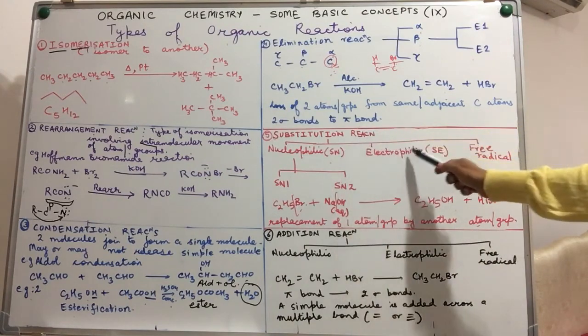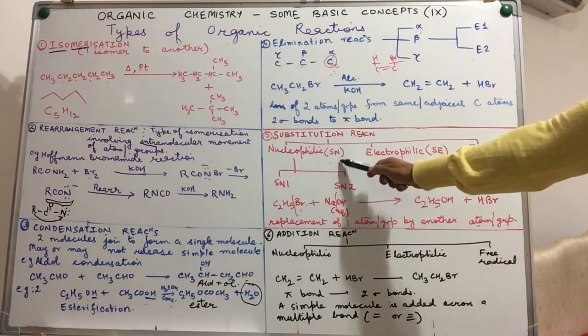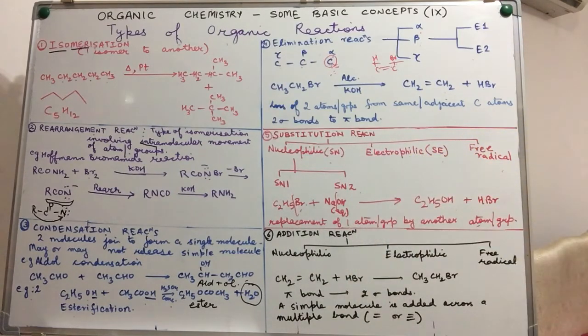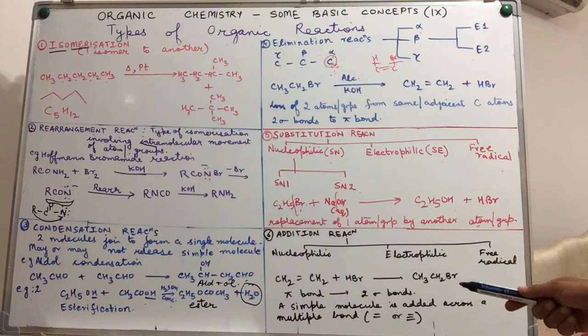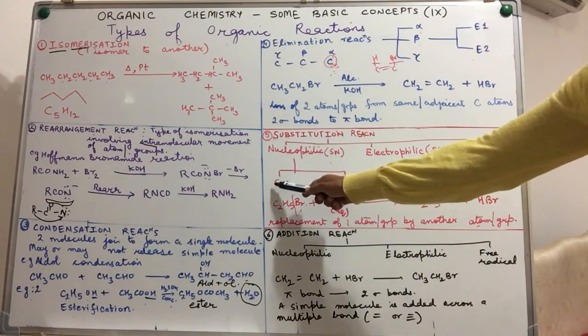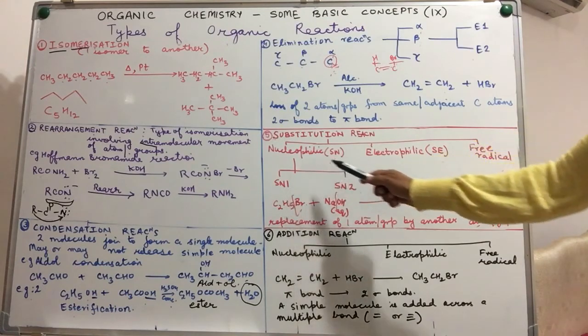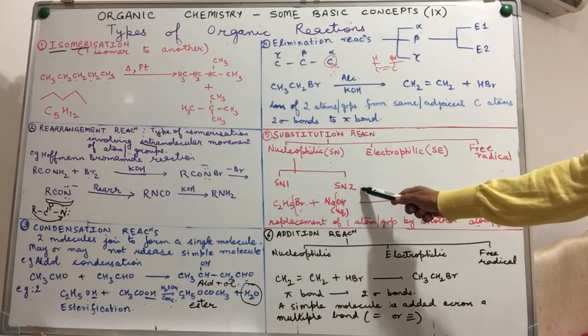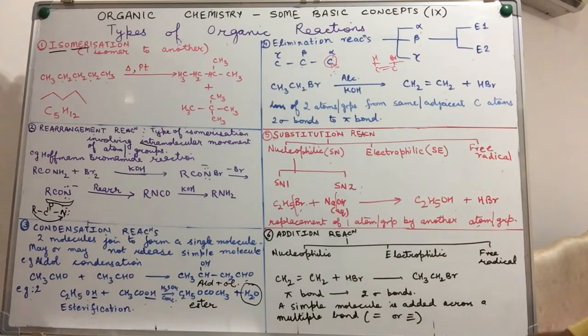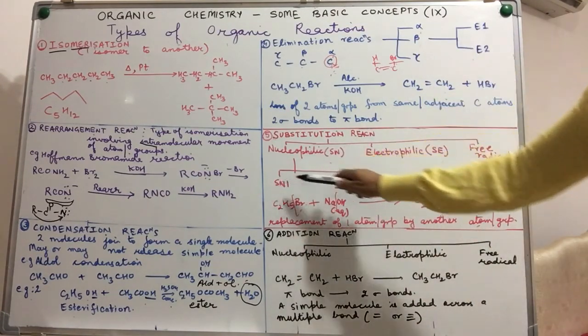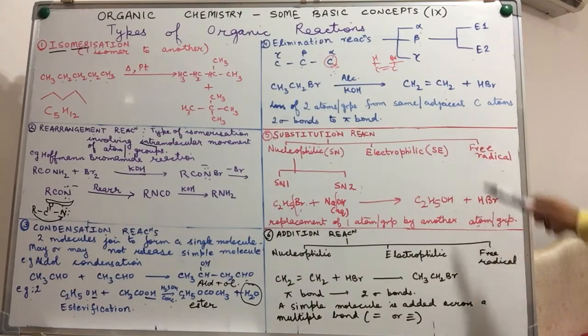Nucleophilic substitution is further classified as SN1 or SN2 reaction mechanism. So SN1 stands for nucleophilic substitution, wherein the process is unimolecular. SN2, where it is bimolecular. So mechanism of all these is part of your study for grade 12.